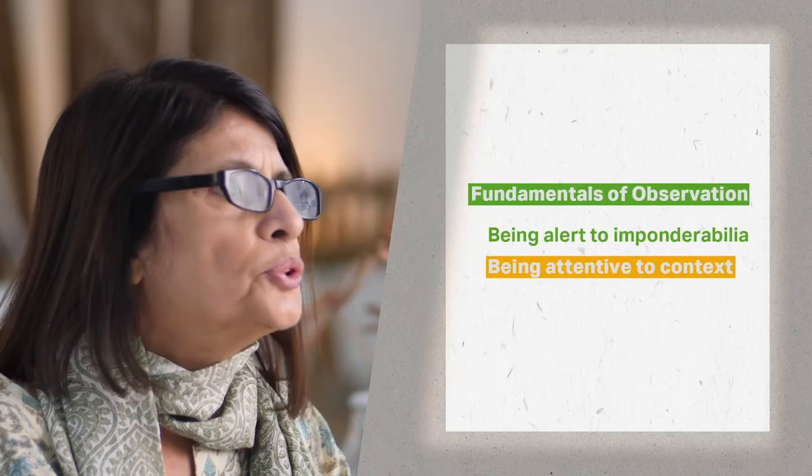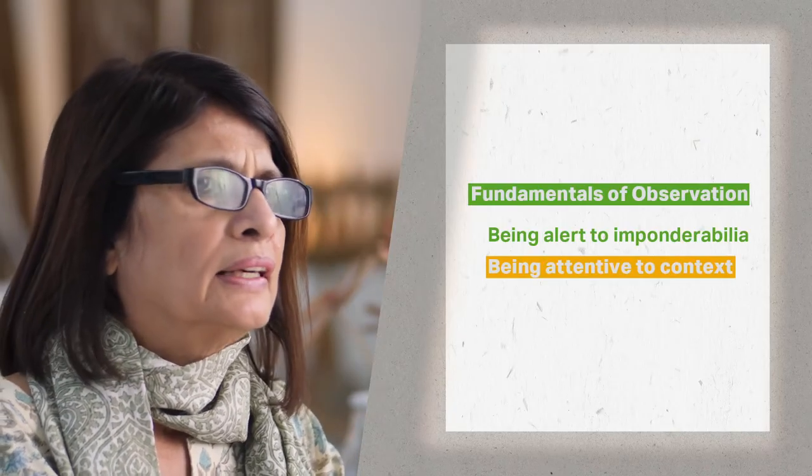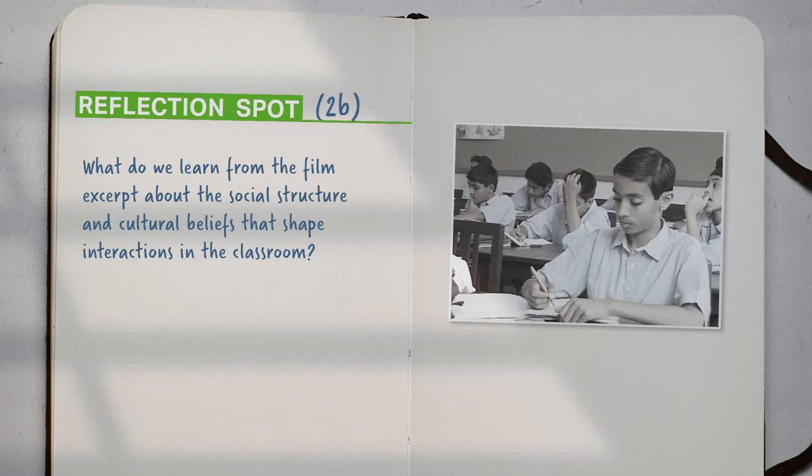But it is not only imponderabilia that makes an observation ethnographic in nature. You might recollect our discussion on thick description. We had said that an ethnographic description is considered thick if it is able to convey the web of meanings or culture which underlie our observation. For this, we need to pay attention to the context — this includes the immediate physical environment, the social structures and cultural beliefs in which the phenomena is located. What do we learn from the film excerpt about the social structure and cultural beliefs that shape interactions in the classroom?